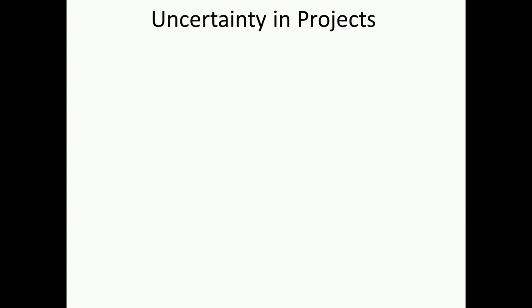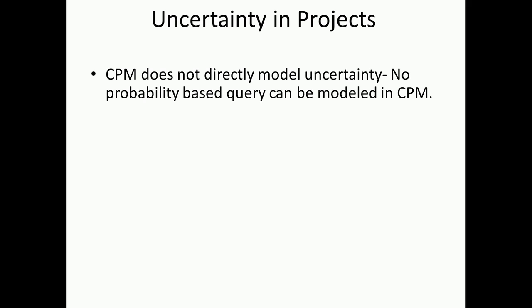Now, if we take uncertainty in projects, we have so far covered the critical path method, and as we are aware, it cannot actually model any probabilistic events. We do everything assuming that it is deterministic - the values for duration, there is no uncertainty involved. We are assuming that that is the duration that is going to happen and we go ahead with the plans. But we certainly realize in our control that that is not what is happening, and uncertainty is handled more in the monitoring and control part of CPM, but there is no direct way in which we can model uncertainty.